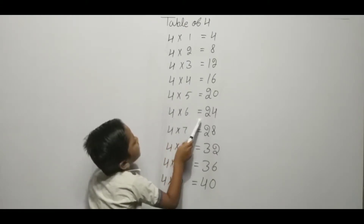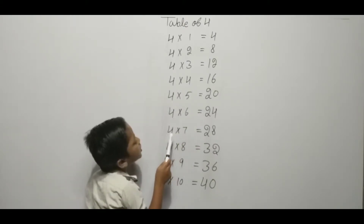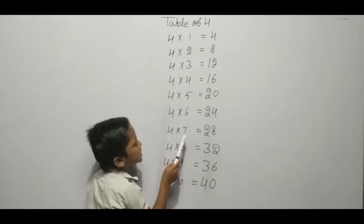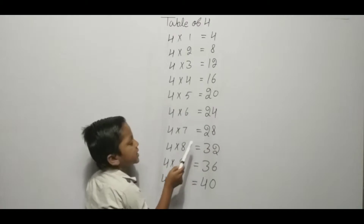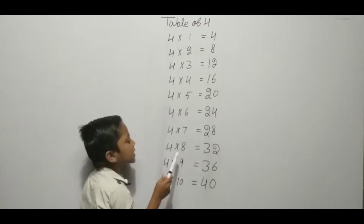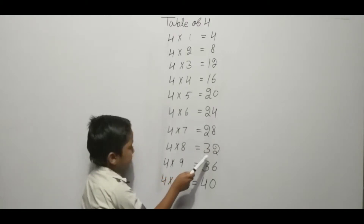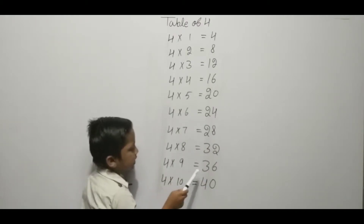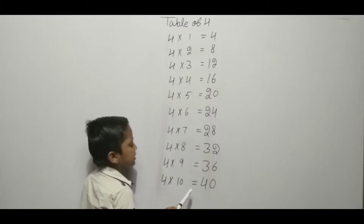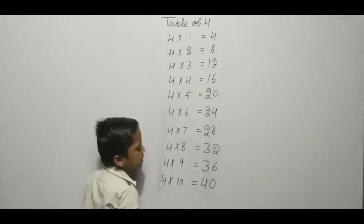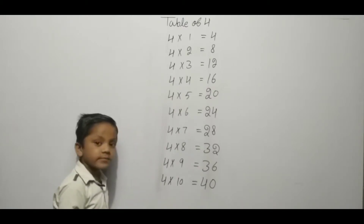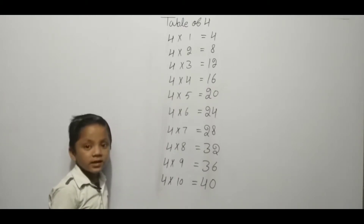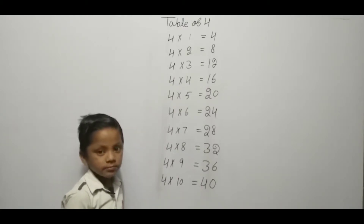Four six ja twenty-four, four seven ja twenty-eight, four eight ja thirty-two, four nine ja thirty-six, four ten ja forty. Thank you.